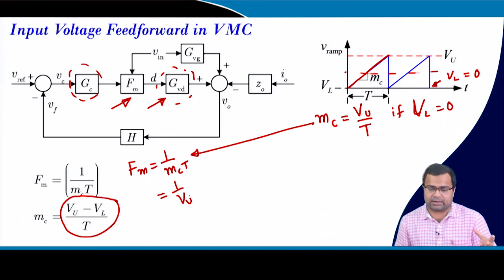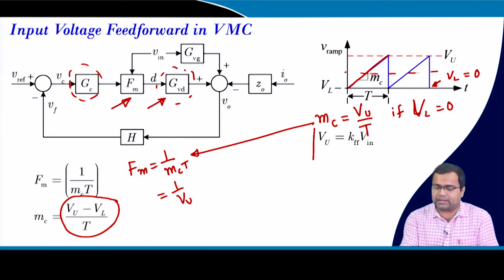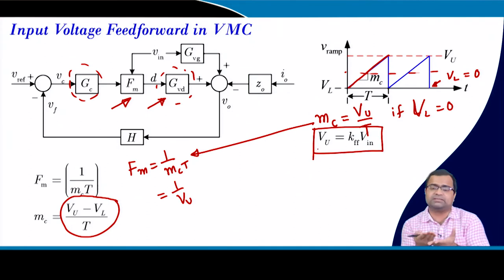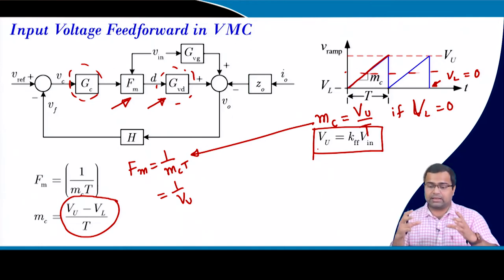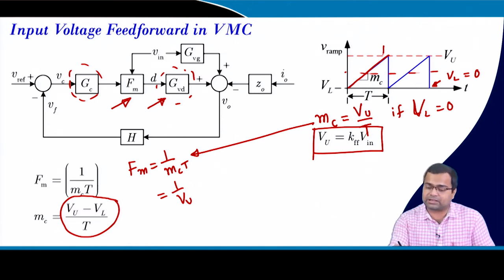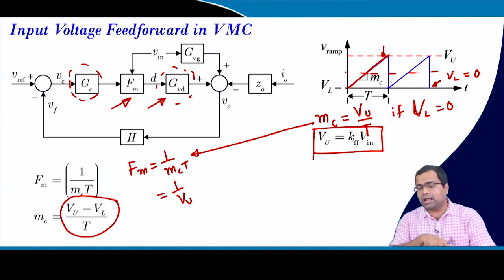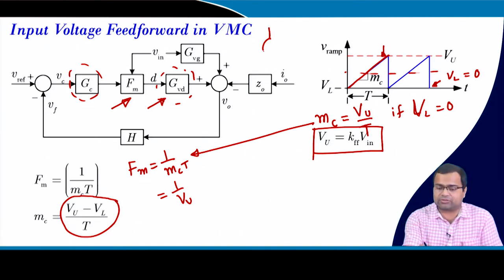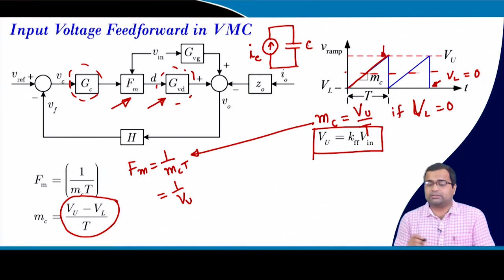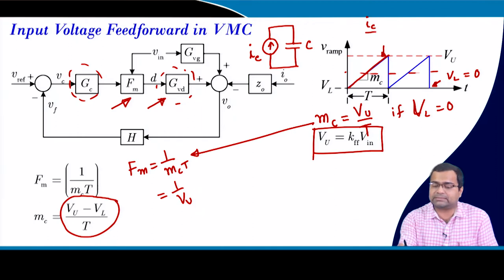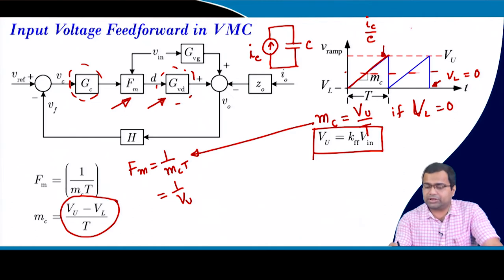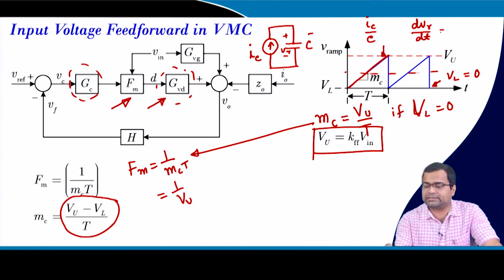From lecture 14, for feed forward we need the slope of the ramp to be proportional to the input voltage. In an integrated circuit, sawtooth waveforms are generated by a constant current charging a capacitor, so the output looks like a sawtooth. The slope dVr/dt = IC / C. By varying the magnitude of the constant current IC in proportion to the input voltage, we can realize the feed forward action.